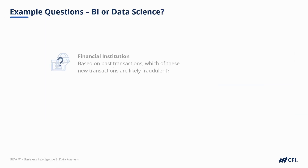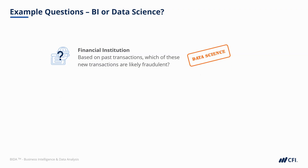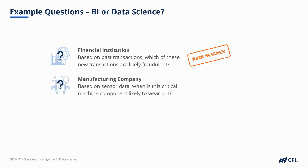Now let's look at some data science examples. A financial institution may ask: based on what we know about past transactions, which of these new financial transactions is likely to be fraudulent? With these predictions, they might perform further checks or enhance risk mitigation. This is data science. A manufacturing company may ask: based on our sensor data, when is this critical component of this machine likely to wear out? This estimation may help the company anticipate failures, perform preventative maintenance, and avoid costly downtime. These predictions are data science.